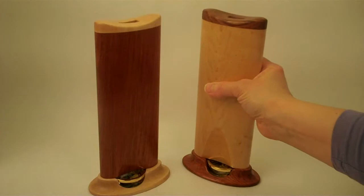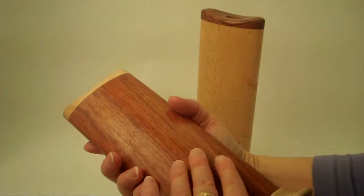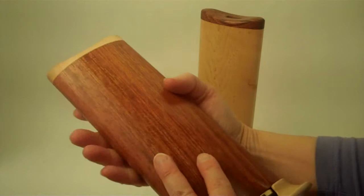And the other is in bubinga, which is this beautiful red tone to the darker wood. Over time and age, the bubinga will darken even more.